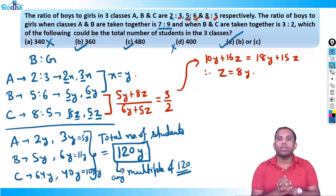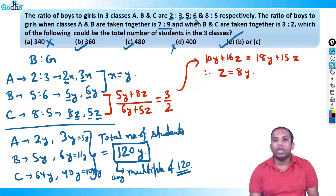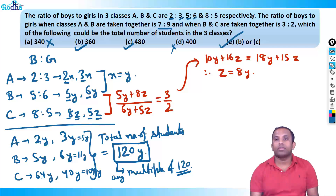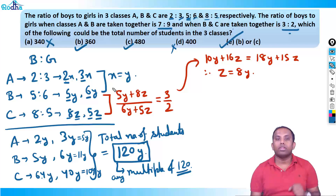A bit of solving was required, but this concept is very important. The key insight is to first check if the given combined ratios are directly satisfied by simply adding the individual ratios. For A and B: 2+5=7 and 3+6=9 gave 7:9 directly. For B and C: 5+8=13 and 6+5=11 gave 13:11, which doesn't match 3:2, so we had to solve. This technique can save a lot of time in exams.